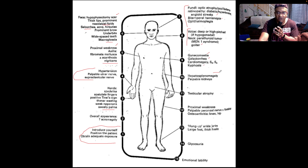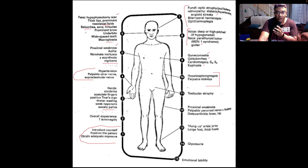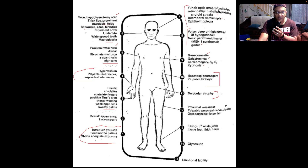Working to the abdomen: does the patient have hepatosplenomegaly on account of organ enlargement as a response to IGF-1? Check for palpable kidneys and testicular atrophy. In the lower limbs, look for proximal myopathy, a palpable peroneal nerve with foot drop, osteoarthritis of the knee or hip, and the so-called hung-up ankle jerks, which is a key sign for hypothyroidism. Large feet with thick heels suggest pachydermia.